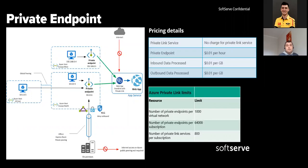Now let's plunge more deeply into Azure Private Endpoints. Azure Private Endpoint is a network interface that connects us privately and securely to a service powered by Azure Private Link. A private endpoint uses a private IP address from our vNet, effectively bringing the service into the vNet. Azure Private Endpoints are not free of charge — the pricing depends on the amount of inbound and outbound traffic and usage time: approximately one cent per gigabyte of incoming and outgoing traffic and per hour of usage.